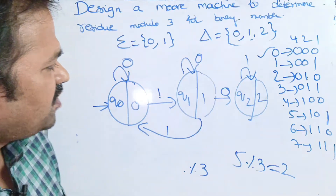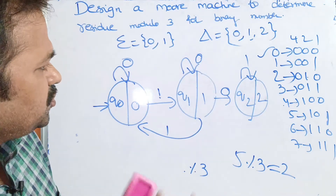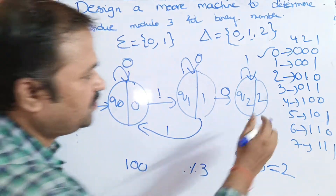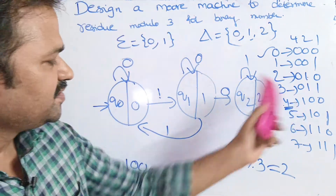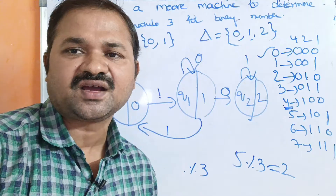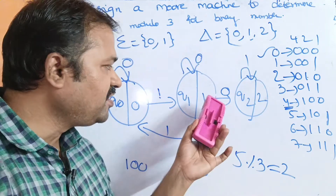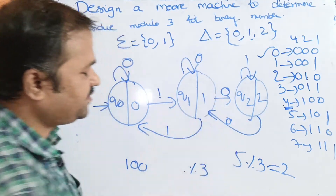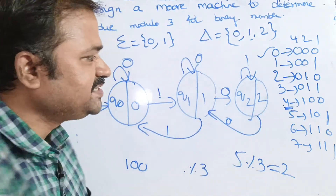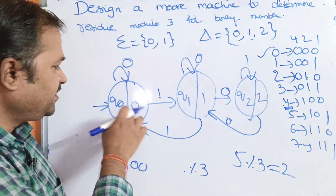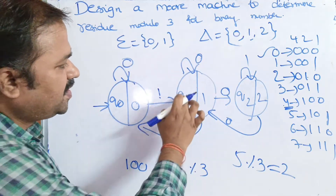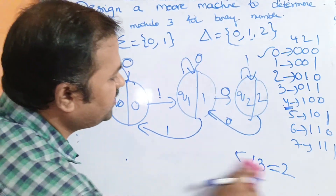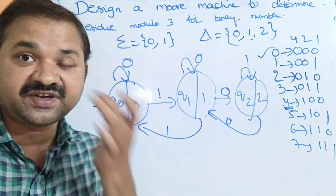On Q2, the input 0 has not yet been applied. Applying 0 on Q2 corresponds to the number 4 (binary 100): 4 modulo 3 equals 1, so we transition from Q2 on input 0 to Q1. Now Q0 has both 0 and 1 applied, Q1 has both 0 and 1 applied, and Q2 has both 0 and 1 applied. This completes the Moore machine to calculate residue modulo 3 for binary numbers.